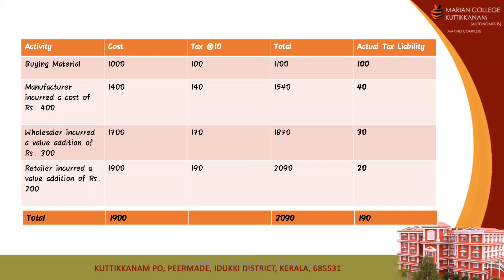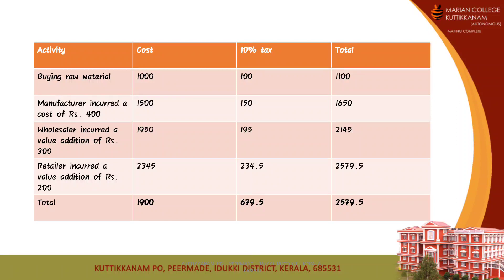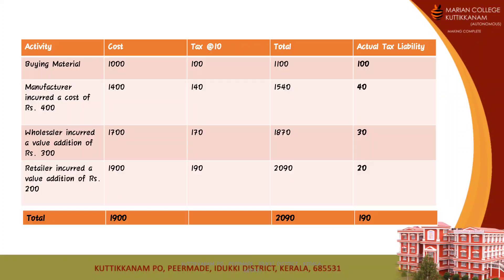Finally, when the product reaches the consumer, they need to pay only ₹2090, and the actual tax liability — on whom the burden of indirect tax falls — is only ₹190. Compare this to the old indirect tax regime, where the final consumer had to pay ₹2579.50 and the actual tax liability was ₹679, which is about six times more than under GST.